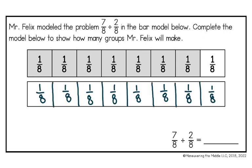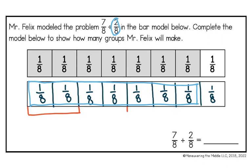Now I need to shade in our second fraction bar. Just like in the last lesson, the amount we shade needs to match the top fraction bar. So I'm going to shade in 7 boxes by putting a lighter blue box around them. The problem tells me we are dividing by 2 eighths, so I'm going to break this into groups of 2 eighths.